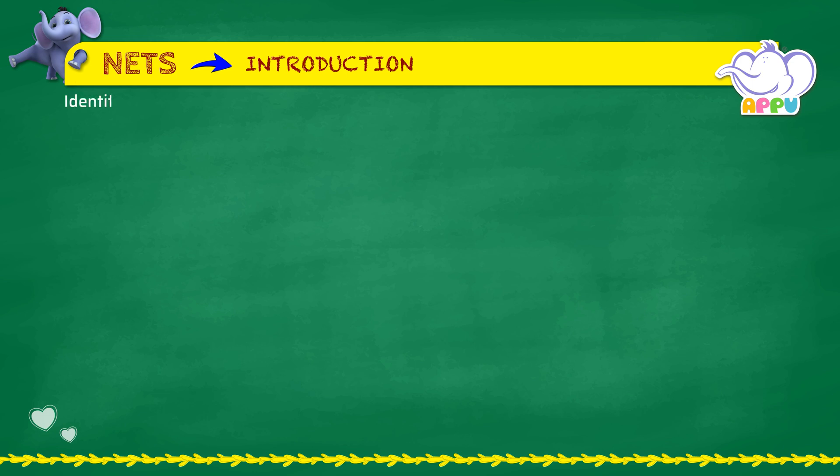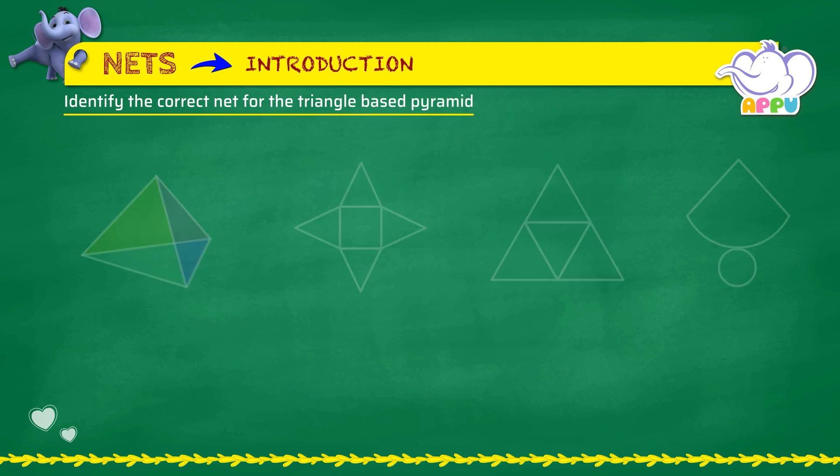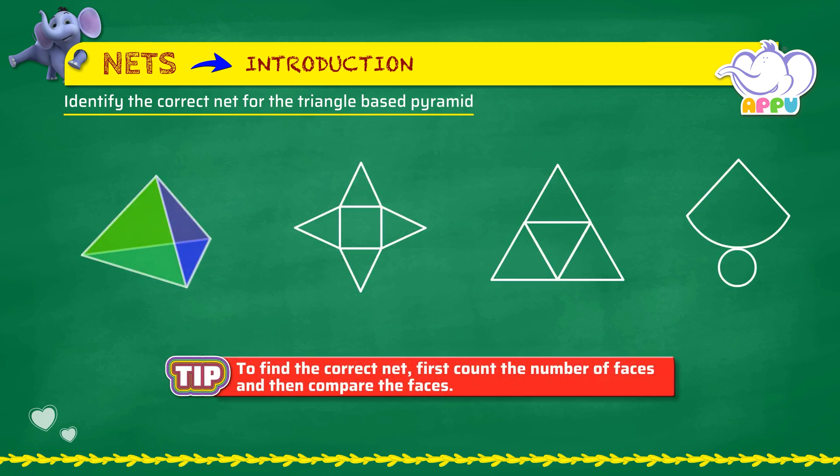Identify the correct net for the triangle-based pyramid. A triangle-based pyramid has four triangle faces.